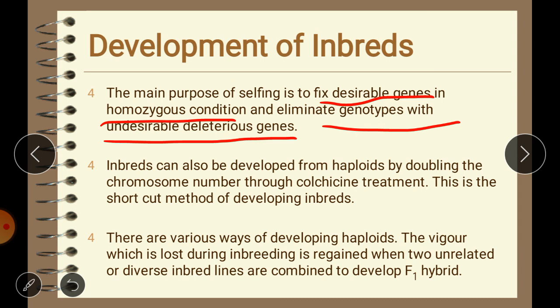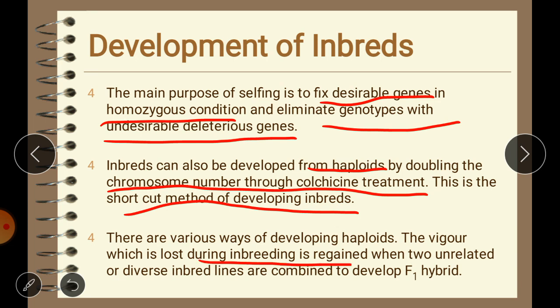The second method is doubling of haploids. Inbreds can be developed from haploid plants by doubling their chromosome number through colchicine treatment. This is a shortcut method of developing inbred lines. There are various ways of developing haploids. The vigor lost during inbreeding is regained when two unrelated or diverse inbred lines combine to develop the F1 hybrid. By using either method we can develop inbred lines.